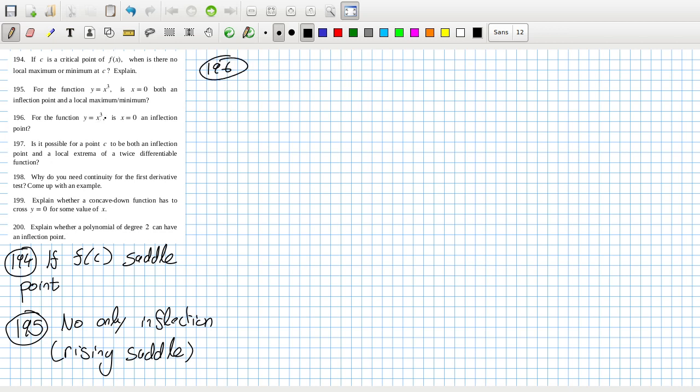196, part of the function y equals x cubed, is x equals zero an inflection point? Again, yes it is. The first derivative of x cubed at zero is zero, the second derivative, so it goes x cubed, 3x squared, 6x, so at zero is zero. And the third derivative at zero is not zero, it's actually positive, so it makes it a rising saddle point.